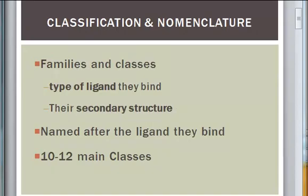They are classified into families and classes. Riboswitches in a family are related by the type of ligand they bind, while they differ in secondary structure and automated sequence. Riboswitches are named after the ligand they bind. For example, the TPP riboswitch binds to TPP coenzyme.